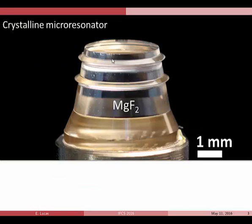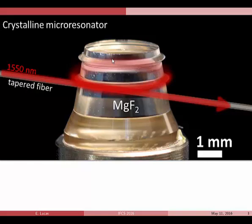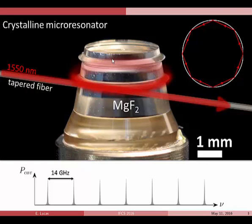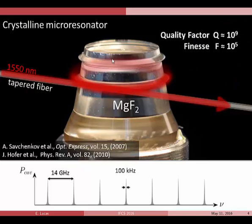Before talking about Kerr frequency comb generation, let me explain the micro-resonator we're using. This is a magnesium fluoride crystalline resonator. When you place a tapered optical fiber in the vicinity of this protrusion, you excite a whispering gallery mode defining an optical cavity. Due to the fairly small dimensions, the free spectral range is on the order of 14 gigahertz. Magnesium fluoride is widely transparent with small absorption, so the intrinsic linewidth is under 100 kilohertz. At 1550 nm, that yields a quality factor on the order of one billion and a corresponding finesse of 10^5.